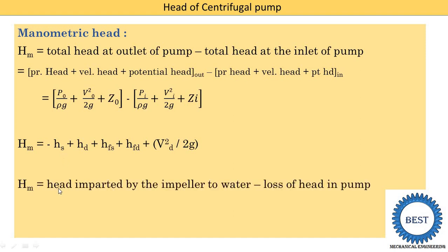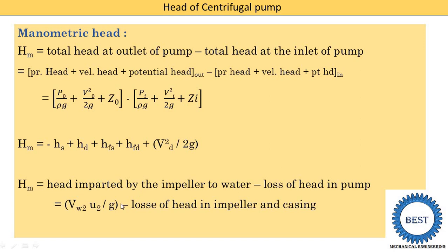The third method: manometric head equals the head imparted by the impeller to the water minus losses of head in the pump. The equation derived for work done is Vw2 × u2 / g. This is the work supplied, and subtracting losses in the impeller and casing gives HM. If losses are not considered, then the manometric head HM equals Vw2 × u2 / g. For more on this, watch the video on velocity diagrams and work done for a centrifugal pump impeller.